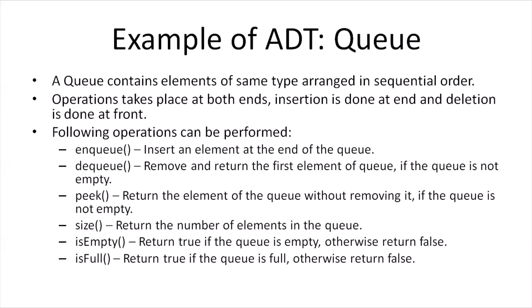By the enqueue operation, a new element can be inserted at the end of the queue. By the dequeue operation, we remove and return the first element of the queue if it is not empty. By the peek operation, we return the element at the front of the queue without removing it, and this can only be done if the queue is not empty. By size, we get the number of elements waiting in the queue. By isEmpty, we check if the queue is empty, and by isFull, we check if the queue is full.